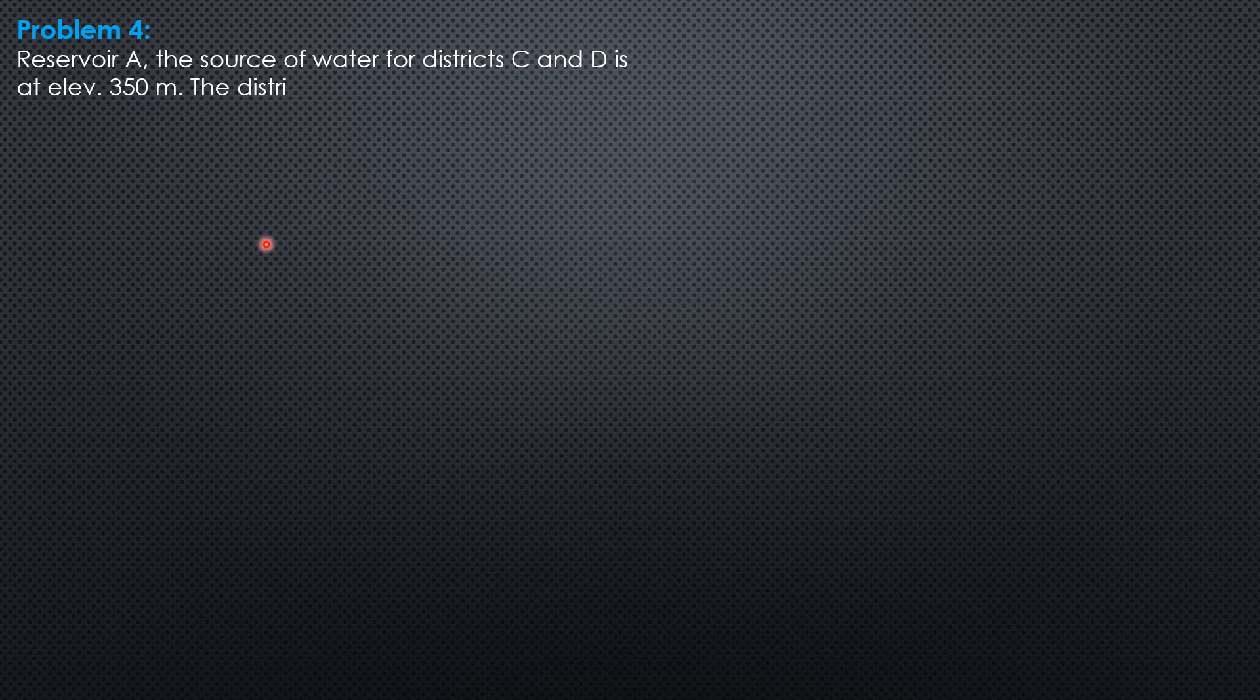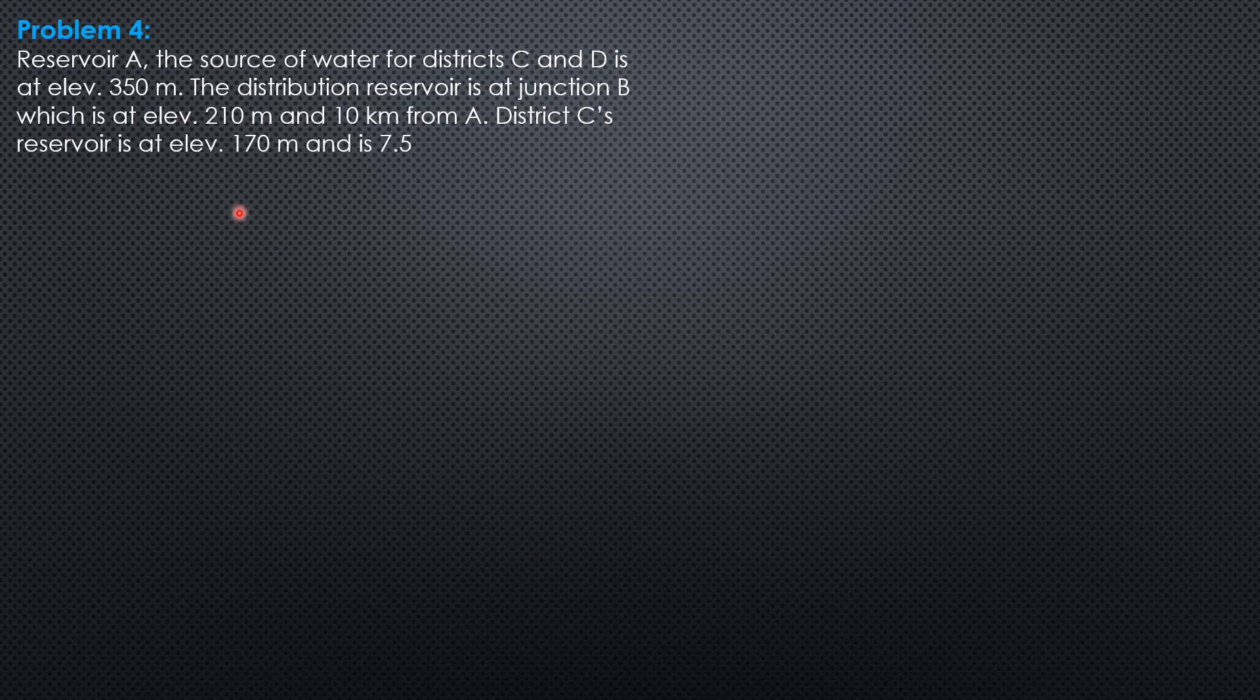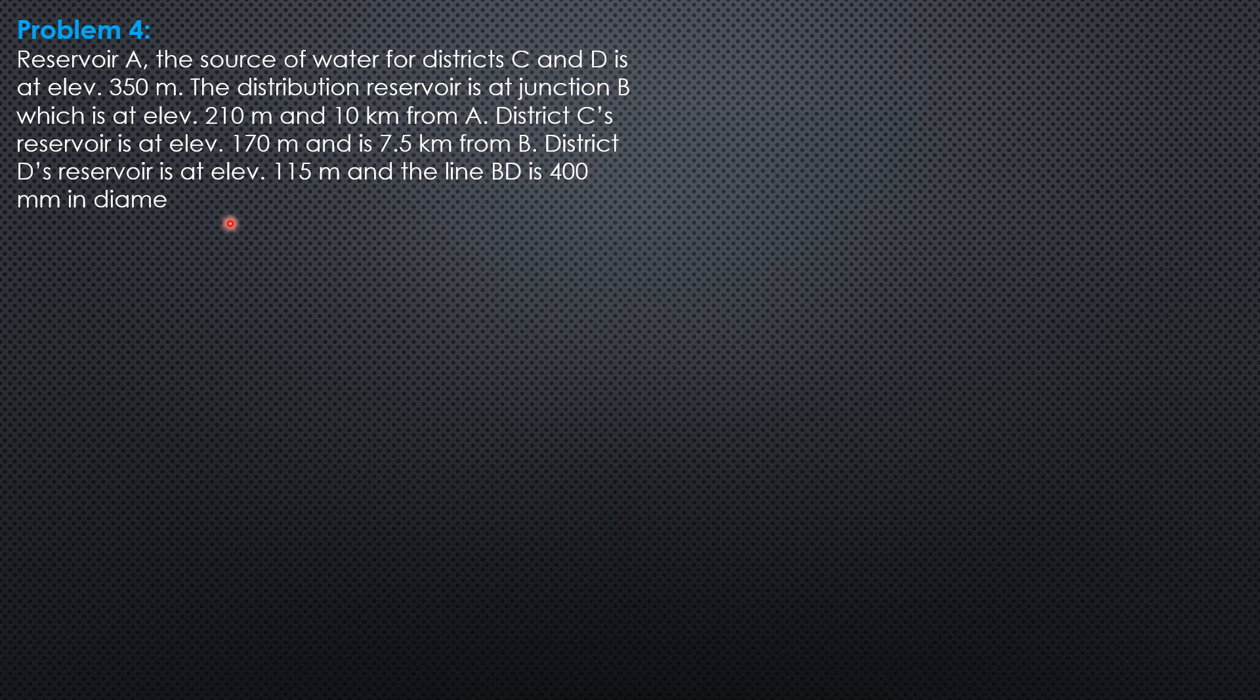Example 4. Reservoir A, the source of water for District C and D, is at elevation 350 meters. The distribution reservoir is at junction B, which is at elevation 210 meters and 10 kilometers from A.